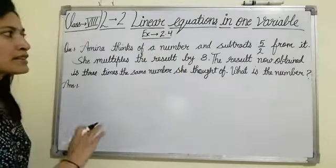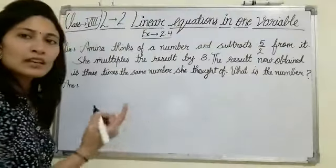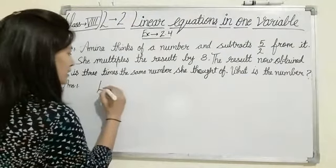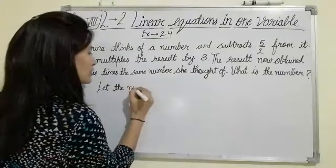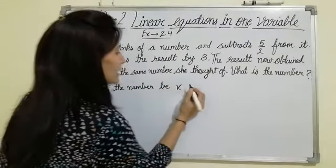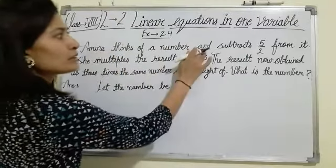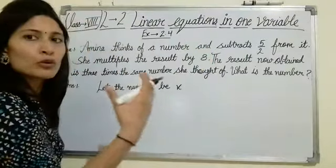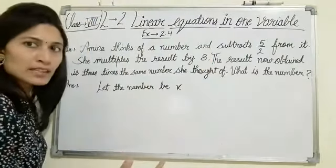In these types of questions, first of all we have to make an equation. Let the number be x. Amina thought of a number and subtracts 5 upon 2 from it, so x minus 5 upon 2.